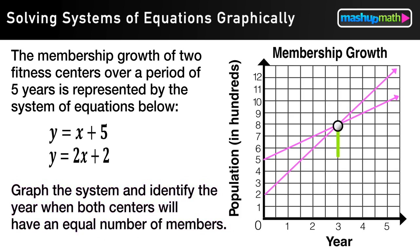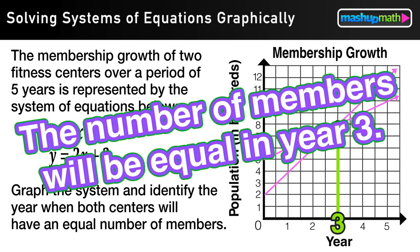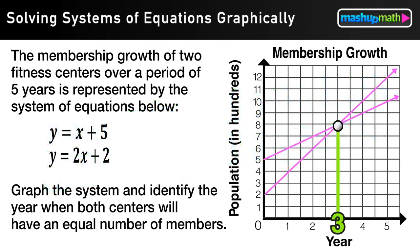So really we want the x-value of our intersection point. That's our year, and we can see that in the third year the number of members will be equal. And that's really all there is to it. It's just graph the system by graphing each line individually, finding where they intersect, and then checking for the x-axis value and you're done. So thanks again guys, we'll see you next time.